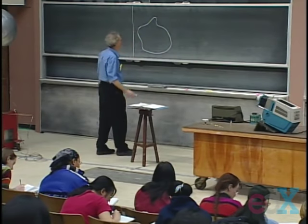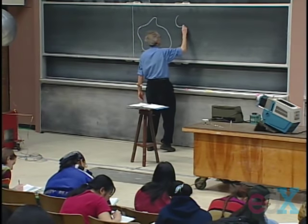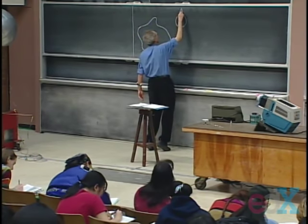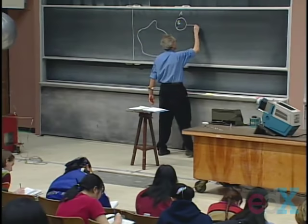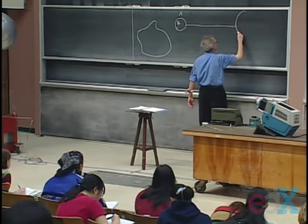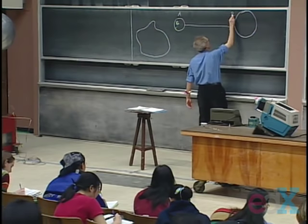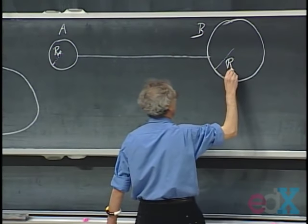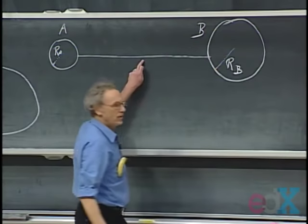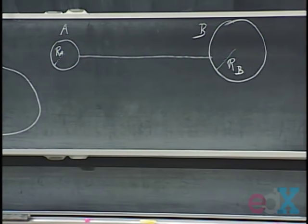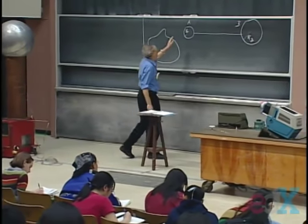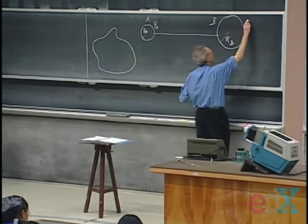The way I want to approach that is as follows. Suppose I have here a solid conductor A with radius R_A, and very far away — maybe tens of meters — I have a solid conductor B with radius R_B, and they are connected through a conducting wire. That is essential. If they are connected through a conducting wire, it's equipotential — they all have the same potential. I'm going to charge them up so I get charge Q_A here and Q_B there.